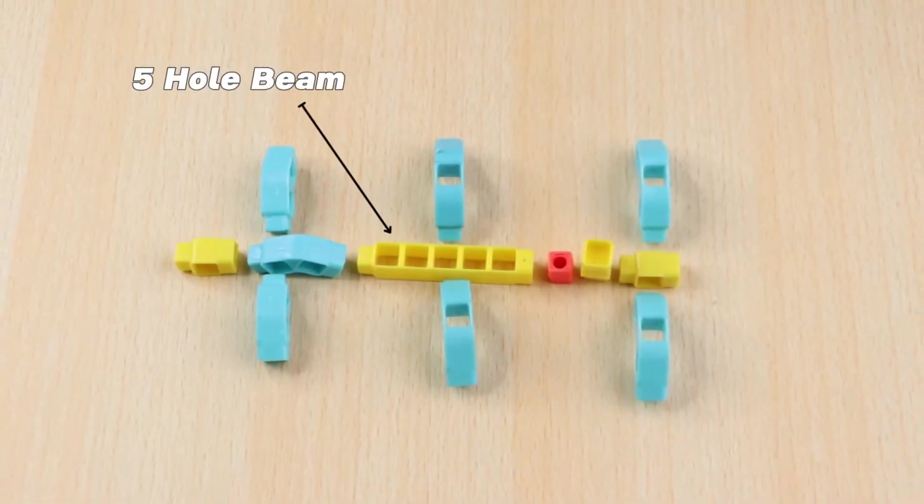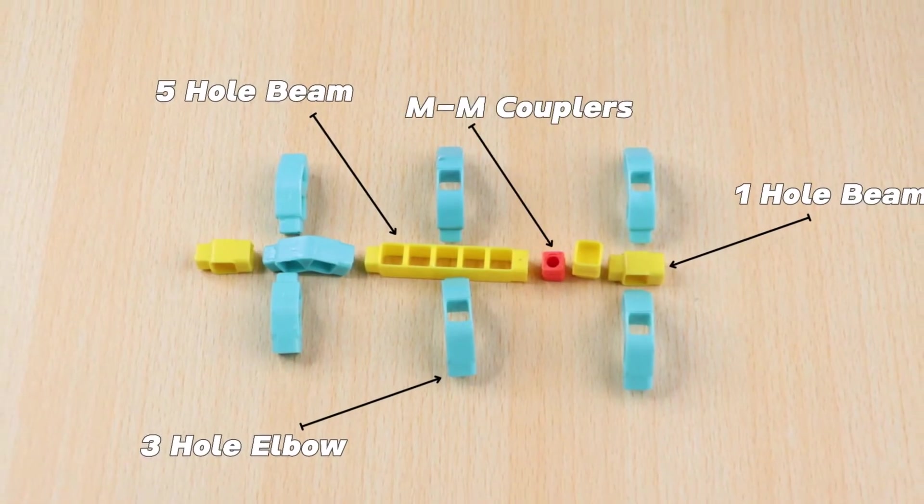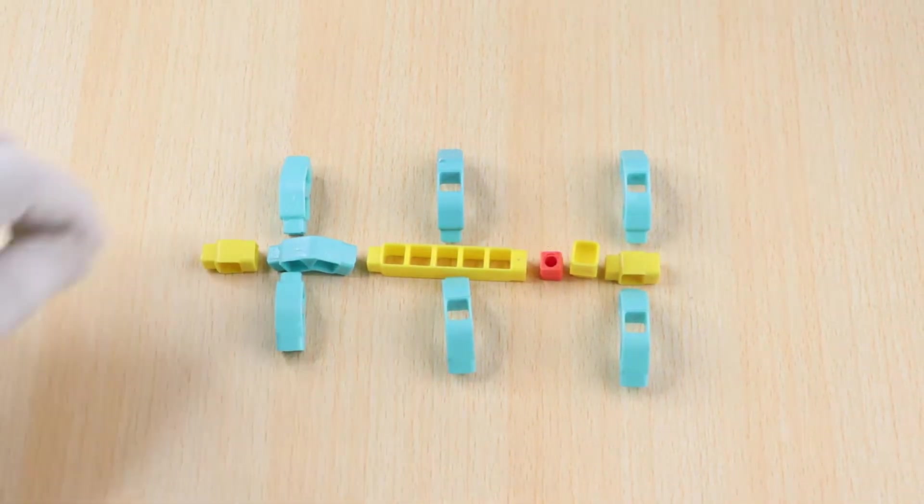Now take 1 five-hole beam, 4 three-hole elbows, 3 one-hole beams, 1mm coupler and join them together as shown.